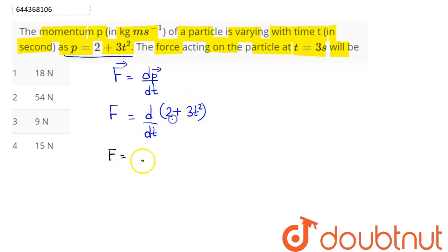Hence, differentiating, this comes as differentiation of 2 is 0 plus 3 into d/dt of t square. Hence, force comes as 3 into differentiation of t square is 2t. So, this comes as 6t.